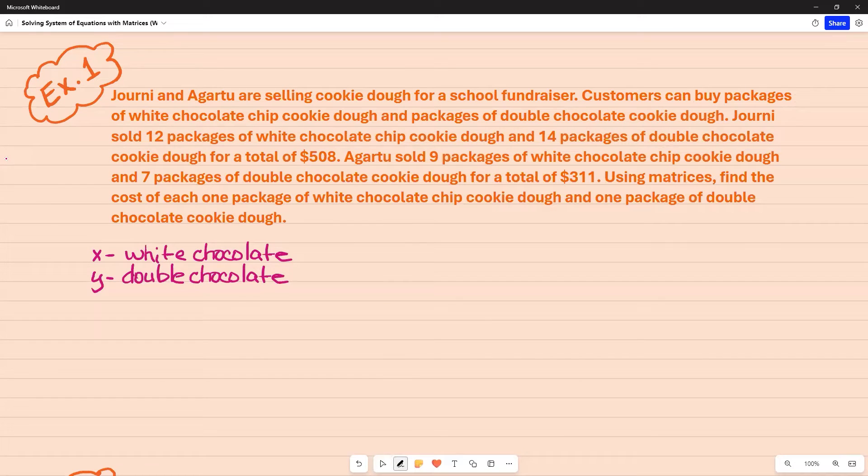So now what I want to do is go ahead and set up my systems. I see that Journey has 12 white chocolate chips, so that's going to be 12X, and then she also has 14 double chocolate, so that's going to be 14Y, and she had a total of $508. Now, Agartu has nine white chocolate chip cookies, and then she has seven double chocolate, and that is a total of $311.